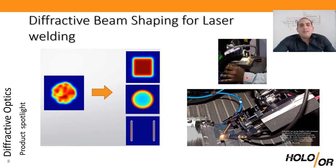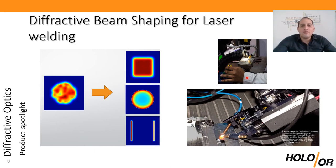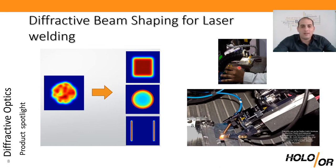Why do you need laser beam shaping in welding? It has been shown in multiple articles and in past projects we were part of, like the Tailor Weld European project, that using a tailored intensity distribution has multiple process benefits. For example, in the case of a ring-type mode with a central spot, it can increase throughput without getting any spatter out of the weld, improve the weld angle, improve weld quality and hardness, and reduce inclusions. All of this is achievable by shaping the laser spot.